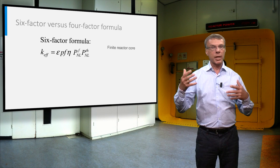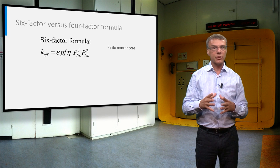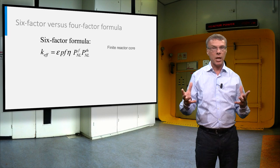We can now wrap up by calculating the ratio of the number of neutrons at the end of the neutron lifetime and the number of neutrons we started with. This ratio is defined as the effective multiplication factor, k-effective, and is given by the six-factor formula on this slide.